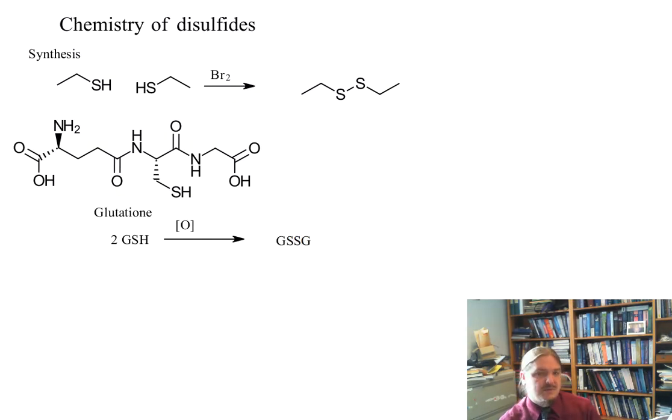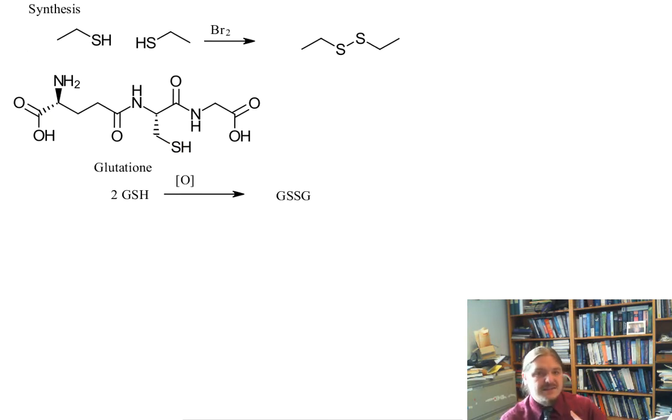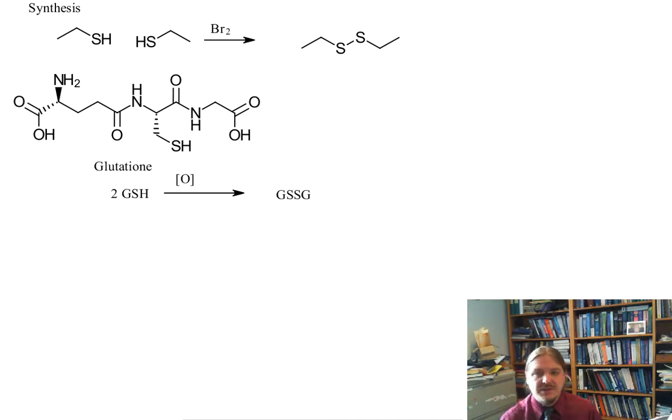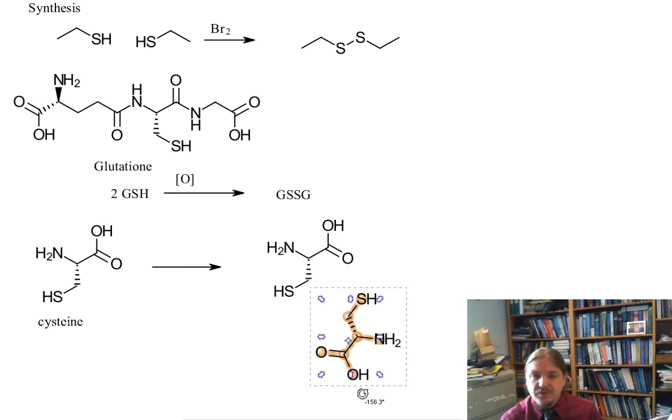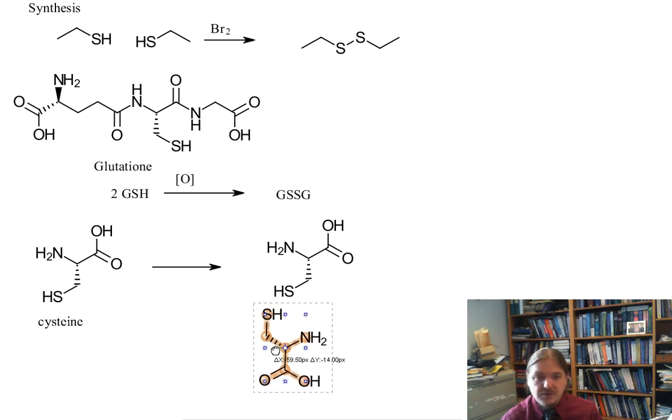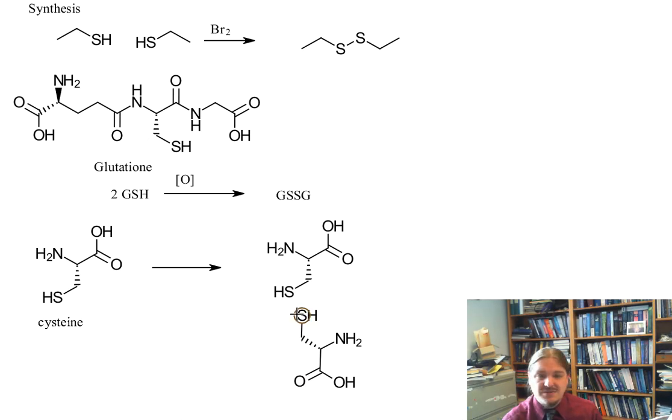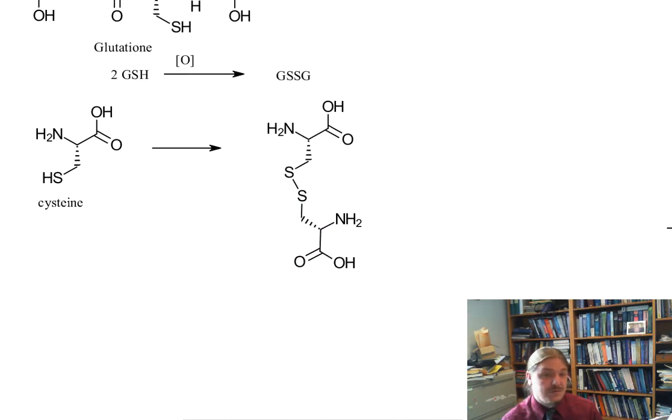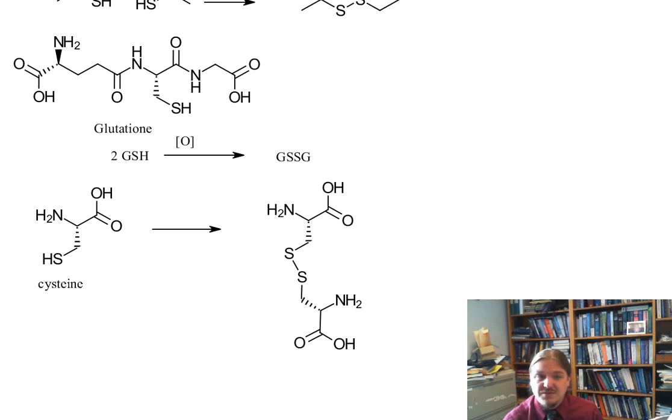We represent the oxidized form as GSSG. The thiol in cysteine as an amino acid is quite special in its ability to form disulfides. There are a number of places in living organisms where disulfide bonds between two cysteine molecules are important structural features, and a really important place for these disulfide bridges is in the tertiary structure of proteins.